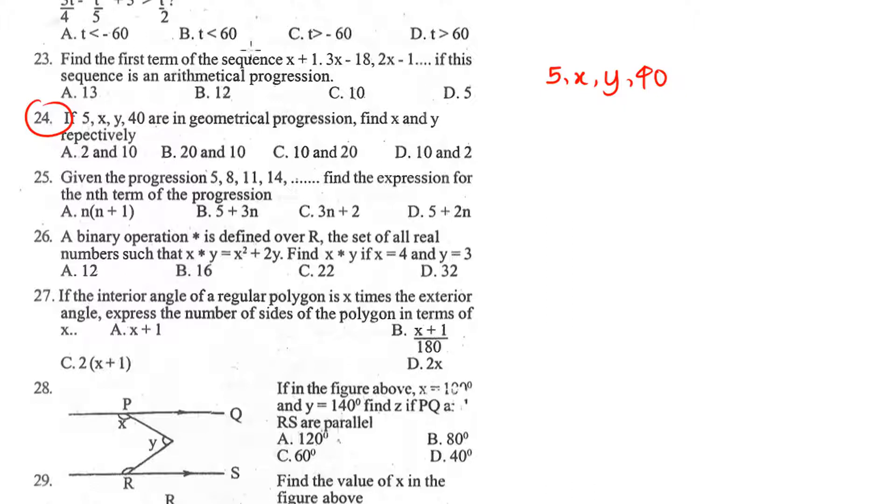Geometric progression means that we are looking at something that is referred to as common ratio. The common ratio will be the next item divided by the previous item, like 40 divided by y would be y divided by x would be x divided by 5. We can say that x over 5 will be the same as y over x, and that will be the same as 40 over y.